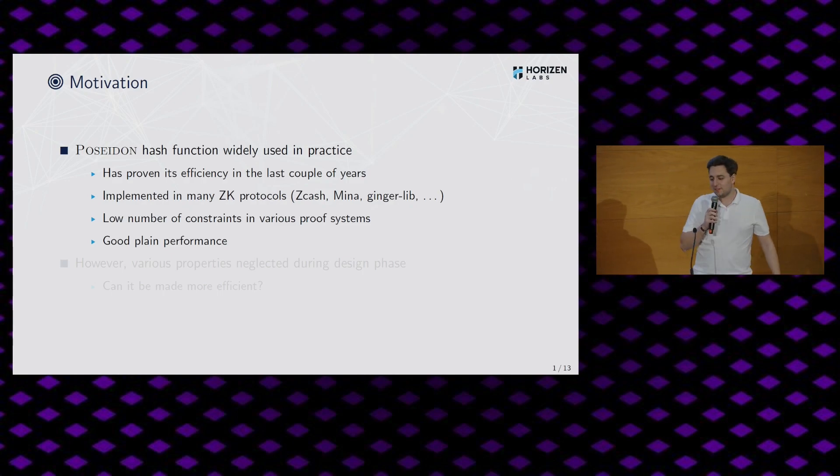So it's also implemented in many ZK protocols. And the good thing or nice thing about Poseidon is that it can be represented by a very low number of constraints in most proof systems. Not all of them, but most. And it also has quite good plain performance. Of course, not like SHA-2, but it's good for what it is.